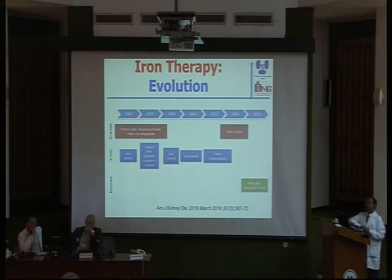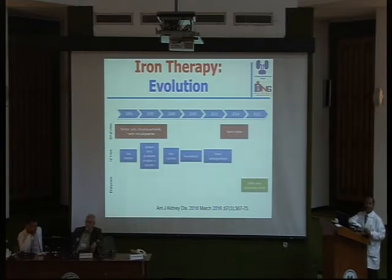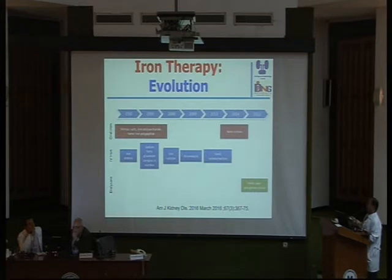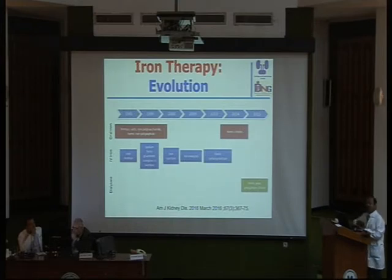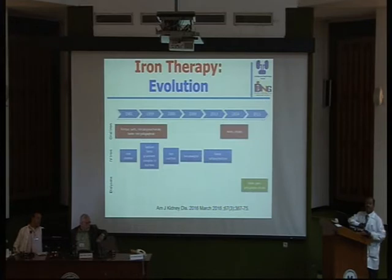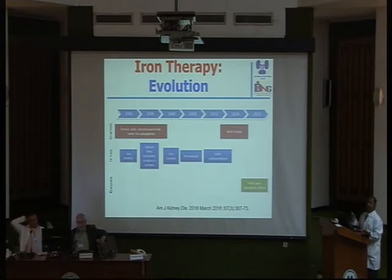Regarding iron therapy, through the years iron therapy has evolved. In the early 1980s, what we had was ferrous sulfate and iron dextran. Through the years, every decade we found new iron formulations. Ferric gluconate appeared later, then around 2000 new forms of iron arrived. In 2014, ferric citrate was introduced. The most recent update in iron supplementation is ferric bisphosphate citrate, which can be added directly to the dialysate. So we have the facility to have this form of iron — ferric bisphosphate citrate — added to dialysis.